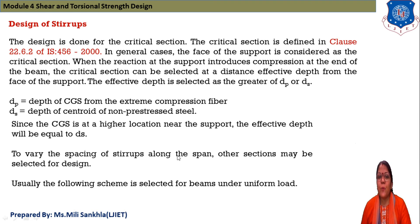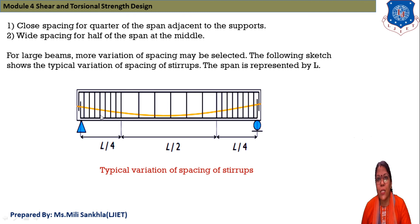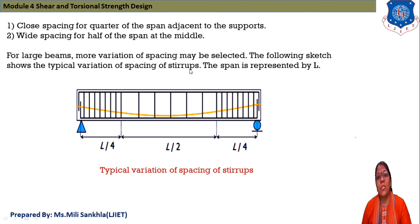To vary the spacing of stirrups along the span, other sections may be selected for design. Stirrups are provided along the beam length with close spacing for the quarter span adjacent to the support and wider spacing for the middle half span. Shear force is maximum at the support so closer stirrups are provided there. For larger beams, more variation of spacing may be selected, as shown in the typical spacing sketch for a simply supported beam.